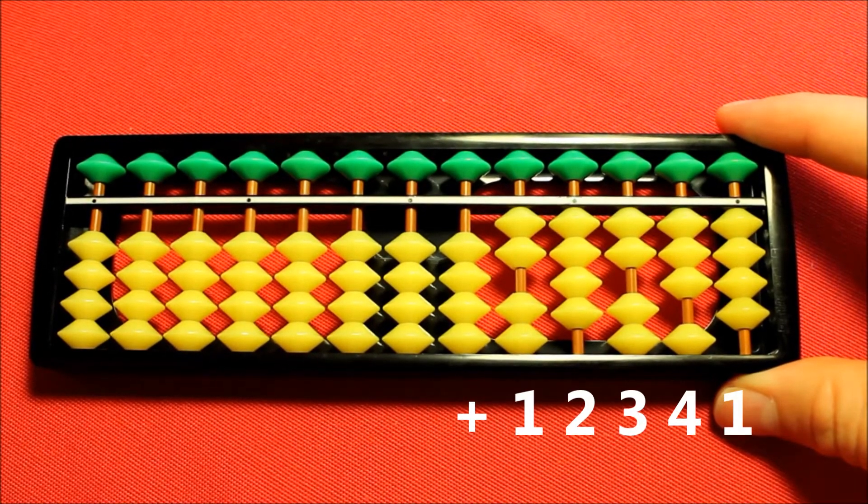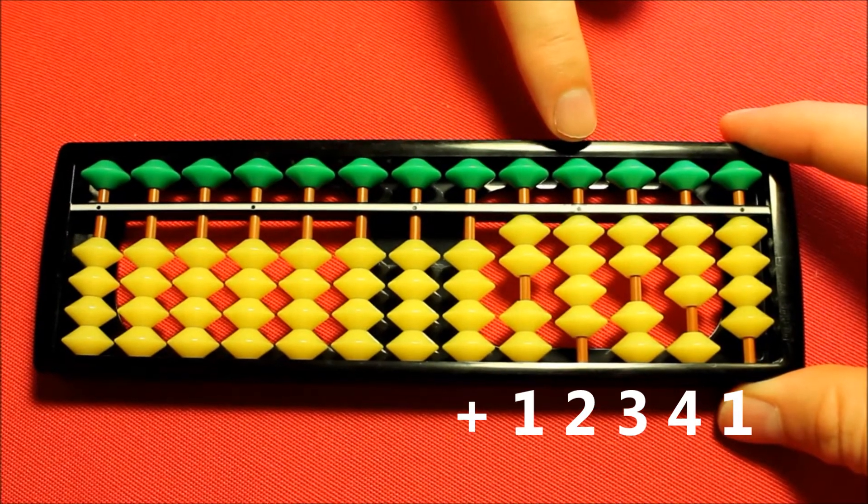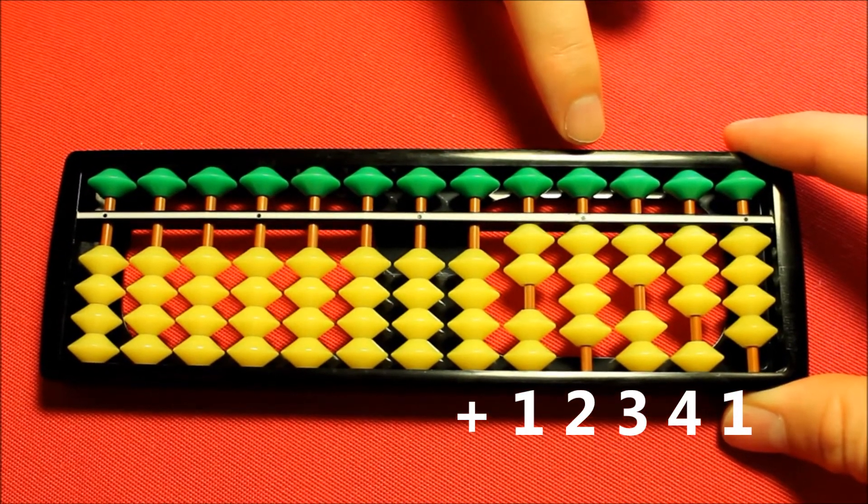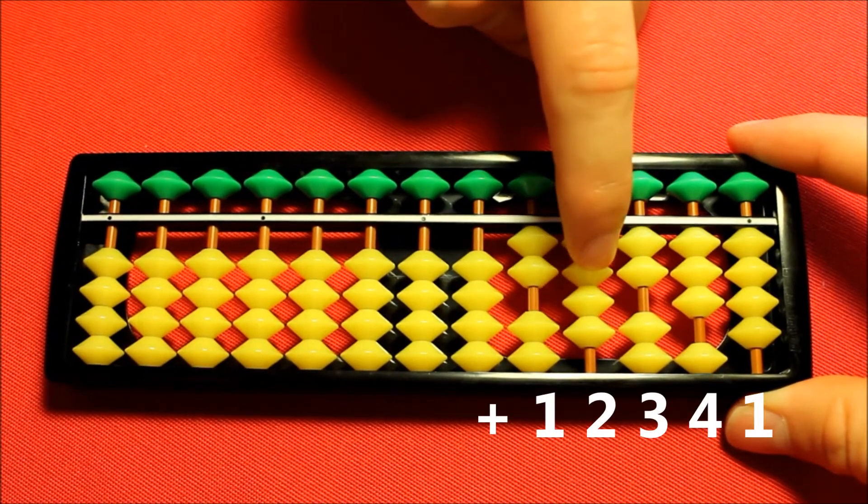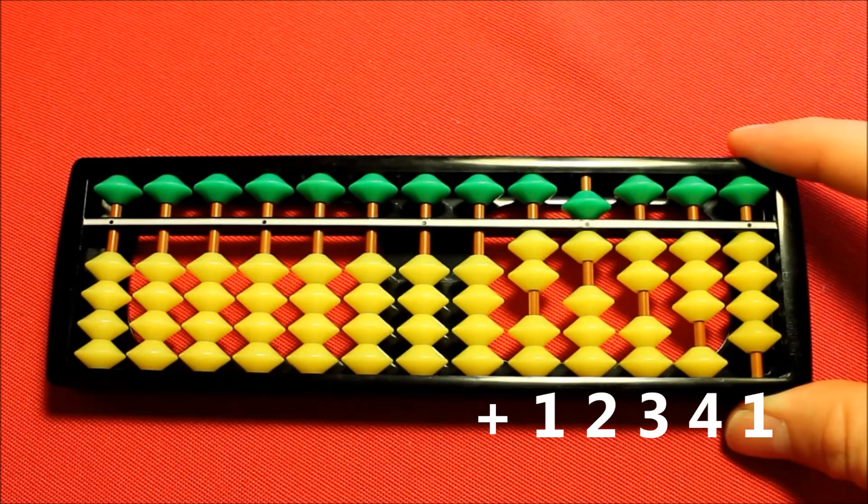Now I'm going to be adding two to the second column. I don't have any earthly beads to play with here so instead I'm going to use the heavenly bead which is going to be three more than the two I wish to add. So firstly I subtract three then I add my five.